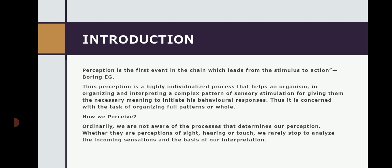In the environment, whatever is happening — two persons communicating, one eating, another doing extra work or writing on a paper — all these things in the environment are stimuli. The person perceiving that environment receives the stimuli, then organizes them, and after organizing, converts them into a meaningful statement. This is what we call perception. Perception is the first event in the chain which leads from stimulus to action.